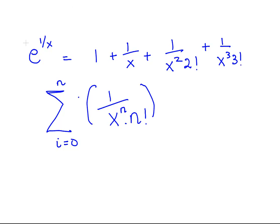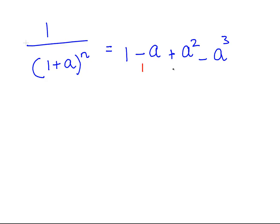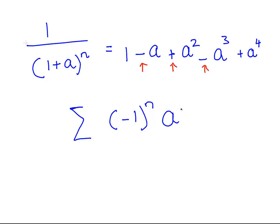Now the next two are two very important ones. The first is 1 over 1 plus a, and this is equal to 1 minus a plus a squared minus a cubed, and so on. This is where the signs alternate. The general term for that is minus 1 to the power of n times a to the power of n. So minus 1 to the power of n helps us alternate between plus and minus signs. The sum runs from i equals 0 to n, and this is quite a useful expression.